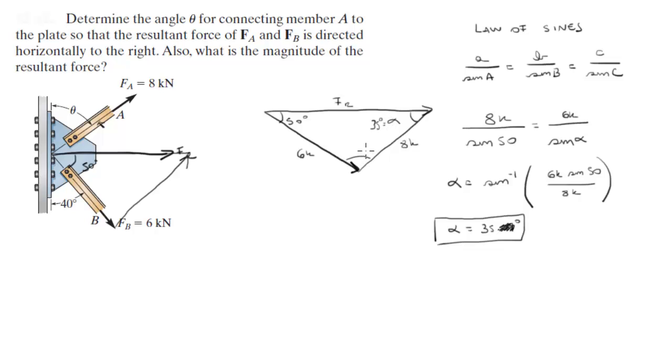So finding this angle is all a matter of 180 minus 50 minus 35, which will give you 95 degrees.